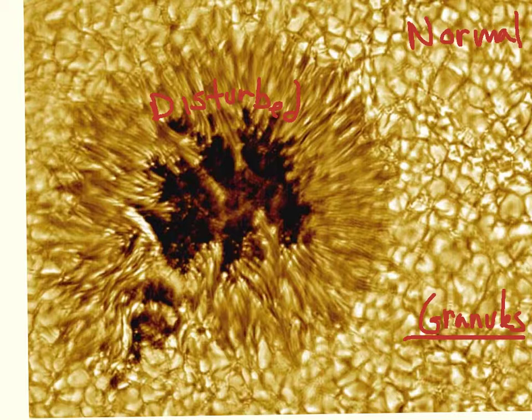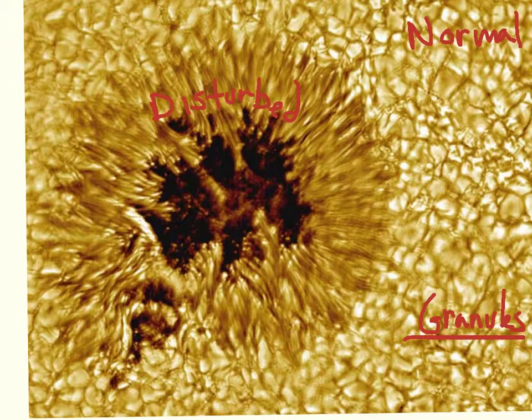Here's what a sunspot looks like up close. This area over here is what the normal Sun looks like — you've got these little areas called granules. A sunspot is going to disrupt that, and what you're looking at here are some of the evidences of that. This is a disturbance; probably the best way I can say it is the Sun is not behaving like it normally does.